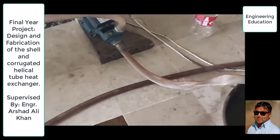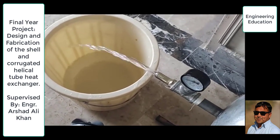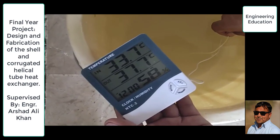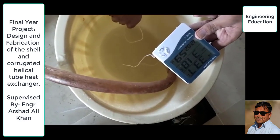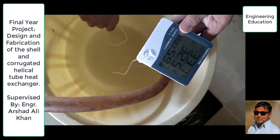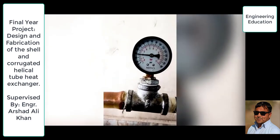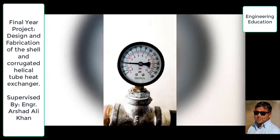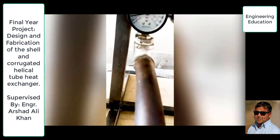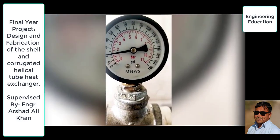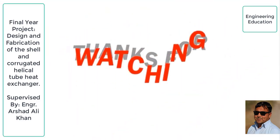This is the outlet of the hot fluid. We are going to measure the temperature at the outlet of the hot fluid. The temperature reading of the cold fluid at the outlet is now 32.5 degrees centigrade. This is the pressure at the inlet of the tube, and here we have the pressure at the outlet of the tube. Thank you for watching.